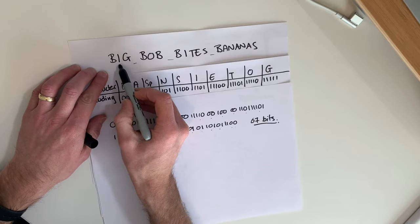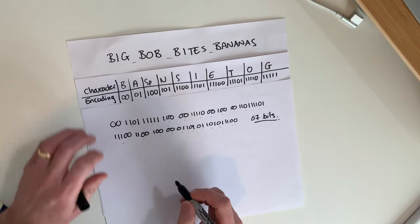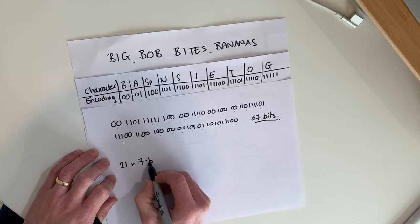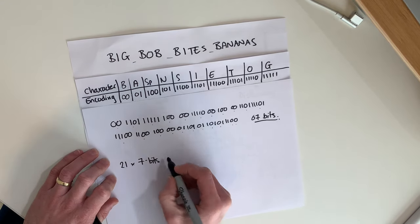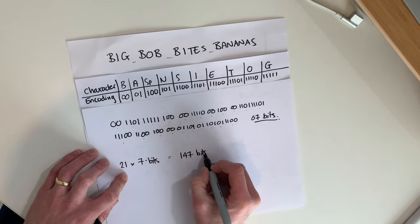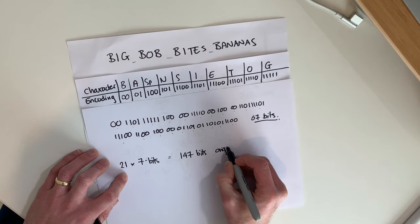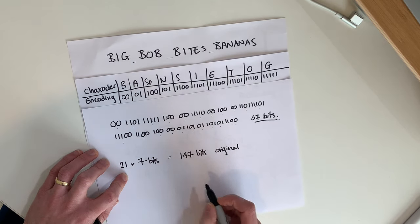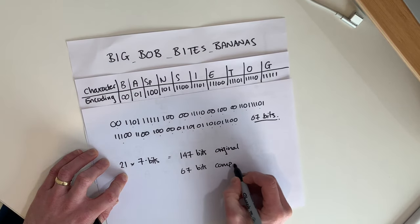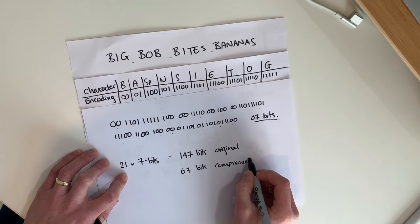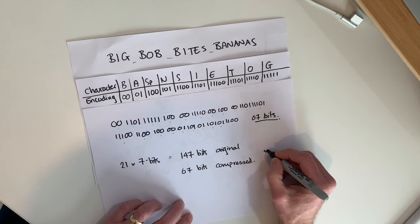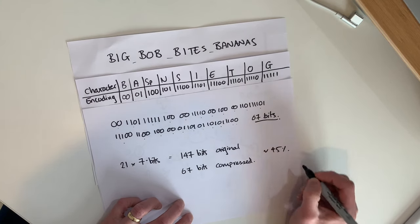If we think about using 7-bit ASCII, our original message had 21 characters. So 21 times 7 bits per character gives us 147 bits for the original, but only 67 bits when compressed. As you can see, that's a significant reduction of about 45% of the original size.